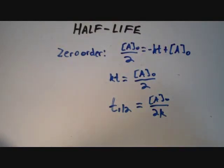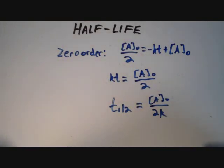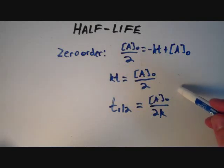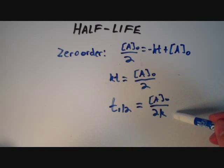So given any two of these terms, we can solve for one unknown. If I know the half-life and the initial concentration, we can solve for the rate constant k. Also, if I know the initial concentration and the rate constant, then we can solve for the half-life.